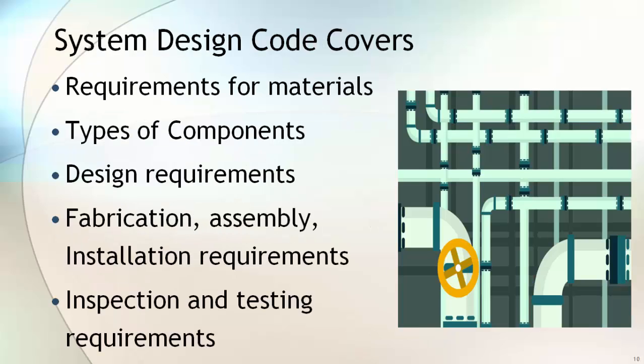System design code covers requirements for materials that can be used in various process conditions, different types of components that can be used, how to design the system, how to fabricate and assemble, installation requirements, and inspection and testing requirements for the entire system.